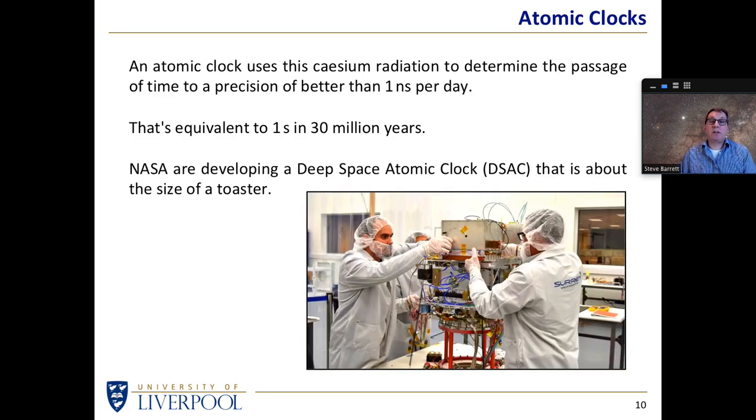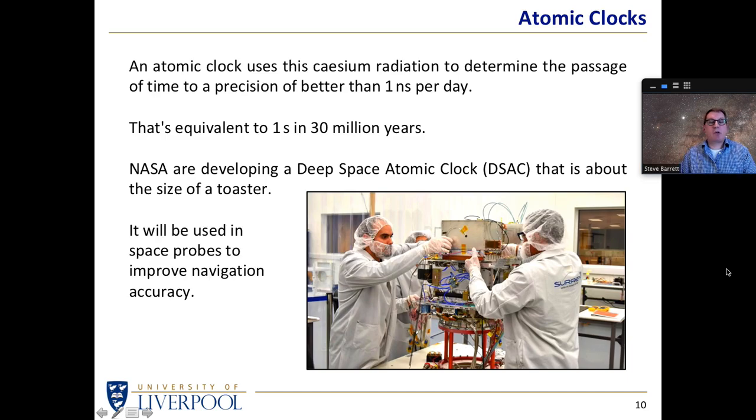NASA are developing new types of atomic clock. They are trying to make it a little more compact. NASA are developing a so-called deep space atomic clock. It's not the whole thing we're looking at there, it's just this little box on the top, about the size of a toaster.